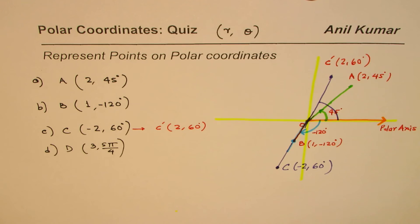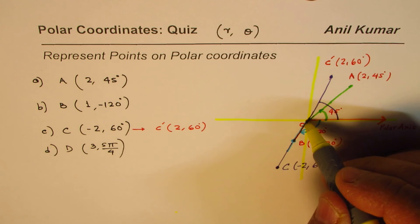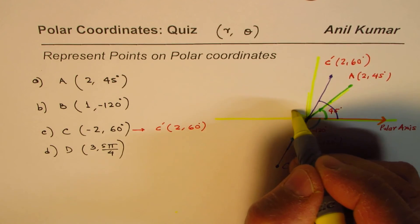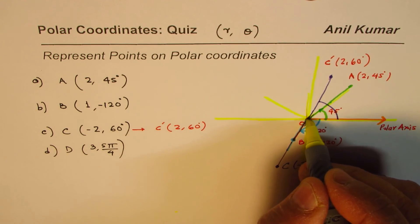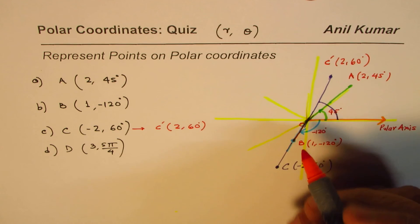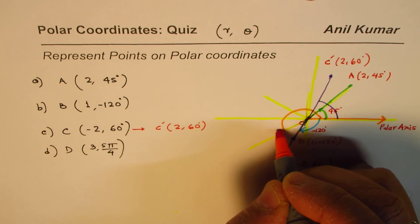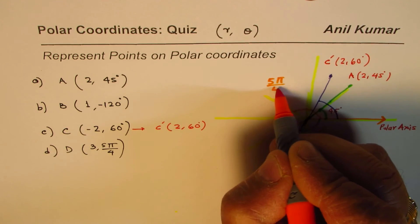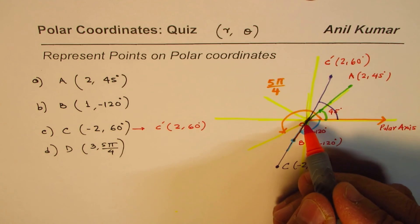Now point D is (3, 5π/4). So the angle is 5π/4. We can divide this into π/4s. So this is 1π/4, 2π/4, this will be 3π/4, 4, and this will be 5π/4. So along this angle, we are calling this 5π/4.